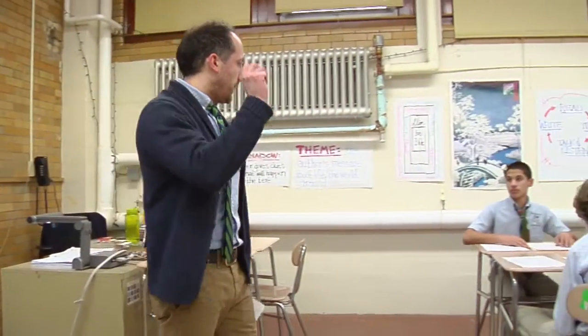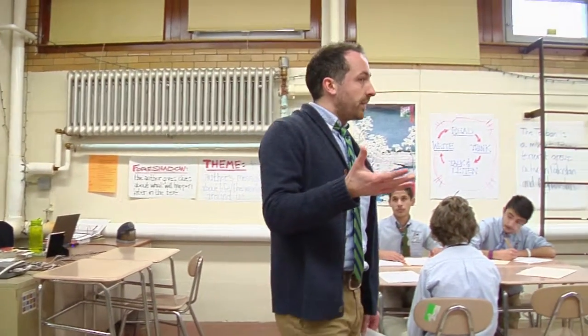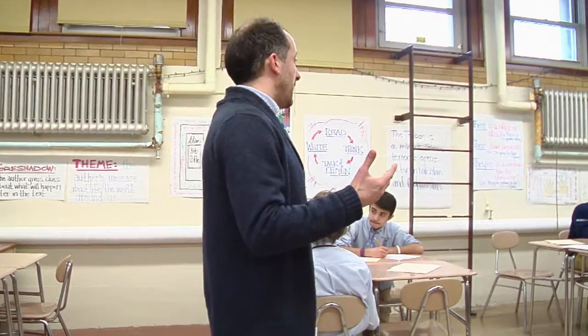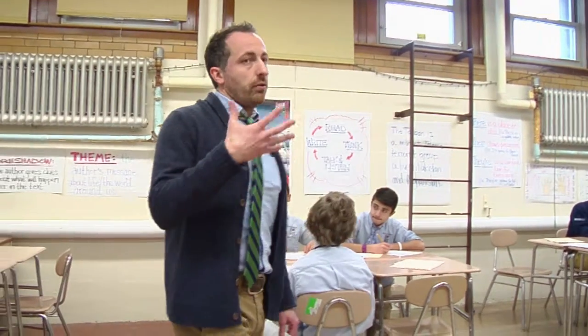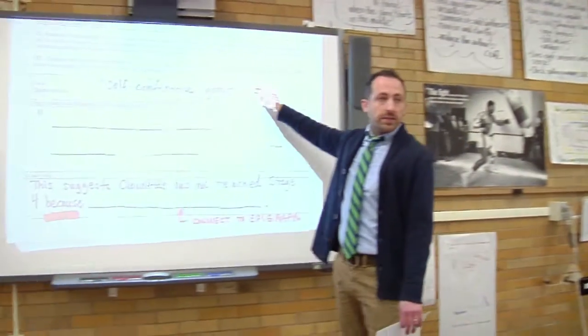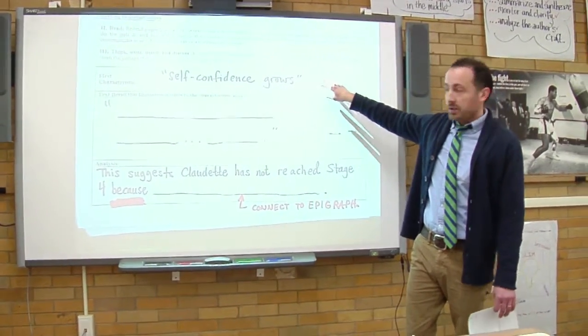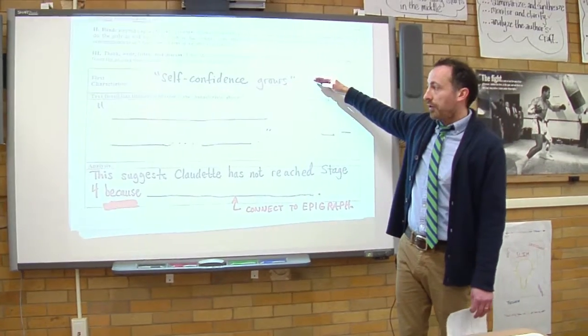As we read, your job is going to be to underline and annotate in the margins where you find evidence of Claudette, Mirabella, or Jeanette either reaching or failing to reach stage four. You're going to jot down the characteristic that you think the character shows or doesn't show in this first box.